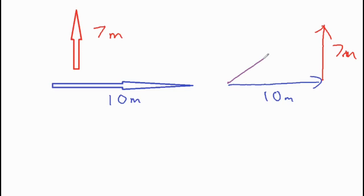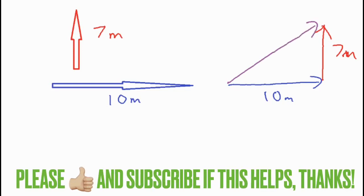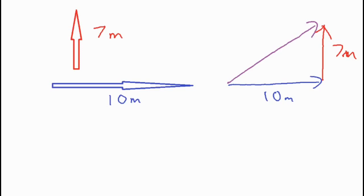The resultant vector is connecting the beginning of your first vector to the end of your second one, or however many you're combining. But in this case, two. And we're going to find the resultant, so I'll call that R.